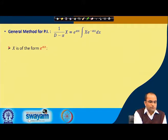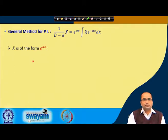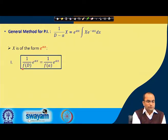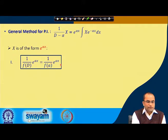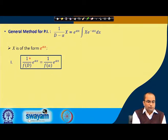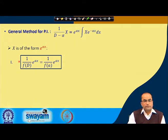We also discussed the special form when X is the exponential function e^(ax). In that case, 1 over f(D) applied on e^(ax) — the only change is that D is replaced by a, giving the value of 1 over f(D) on the exponential function.